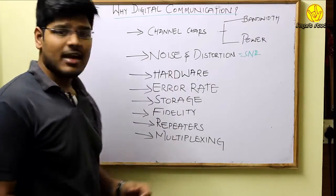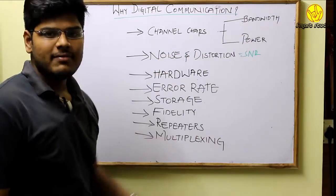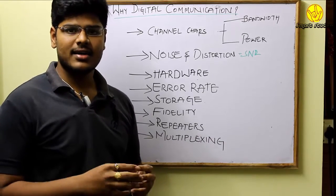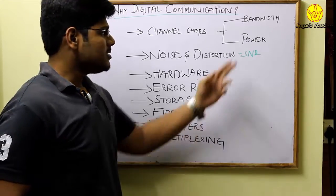First, the channel characteristics. The channel characteristics are the bandwidth and power. When it comes to the bandwidth, the bandwidth is higher in digital signals, higher in digital communication when compared to the analog communication.